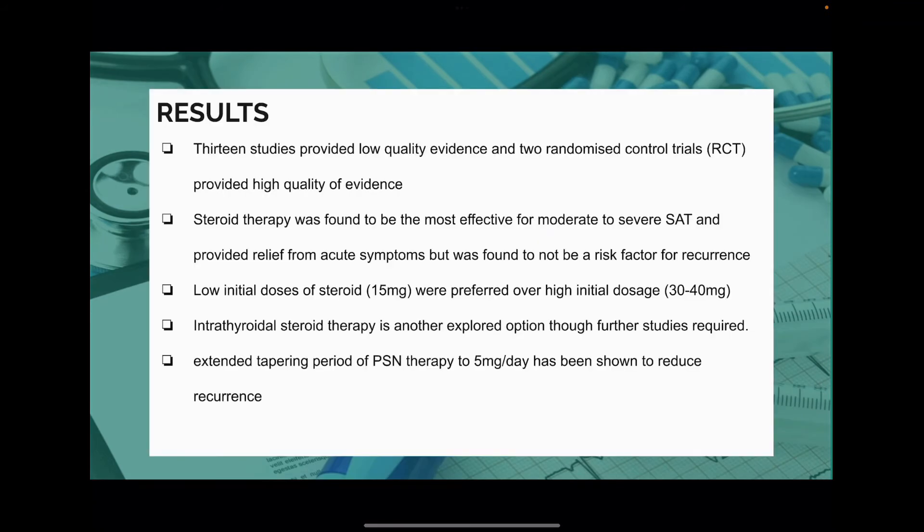The results: 13 studies had low-quality evidence, whereas the two randomized controlled trials had high-quality evidence. Steroid therapy was found to be the most effective. Low initial doses of steroid, like 15 mg, were preferred over high doses. An extended tapering period of steroid to 5 mg per day has been shown to reduce recurrence rates.